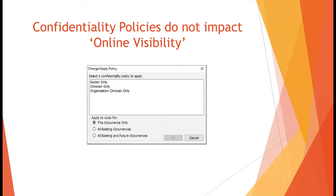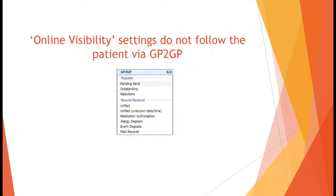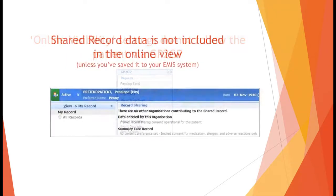Unless it's restricted by the online visibility option, a record transferred via GP2GP will not include any online visibility restrictions that you put onto it. You may wish to implement local procedures regarding advising a practice to which a patient is moving of any restrictions that are in place. Hopefully other practices will also share this information with you for your incoming patients.